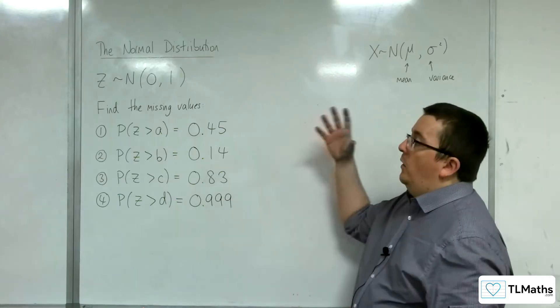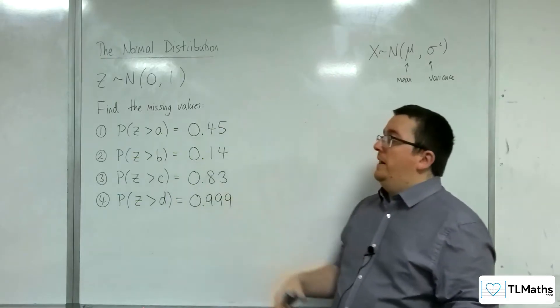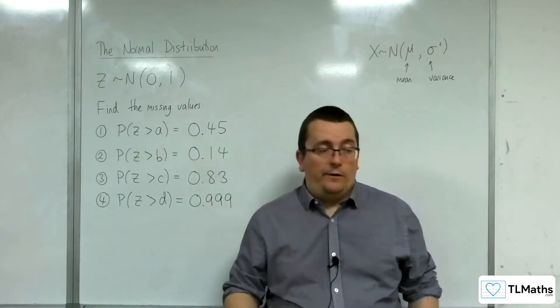We're going to see more examples of working backwards from probabilities to find the values of A, B, C, and D using our calculator.